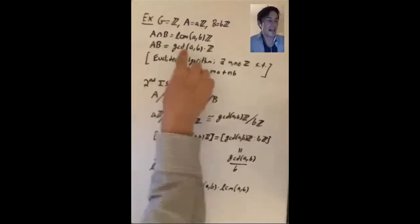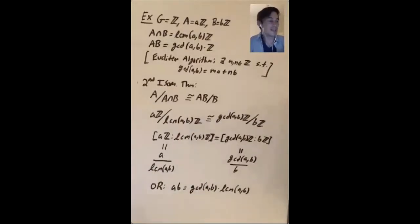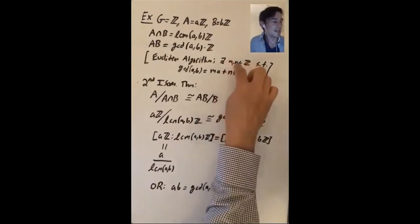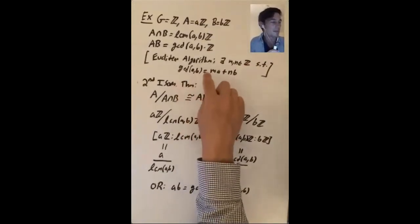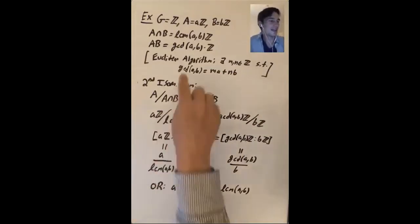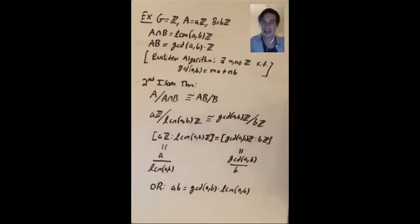The product set aZ + bZ equals gcd(a,b)·Z. The Euclidean algorithm (Bezout's identity) tells us there exist integers m, n such that gcd(a,b) = ma + nb, so gcd(a,b) is in the product set. The reverse inclusion holds as well.